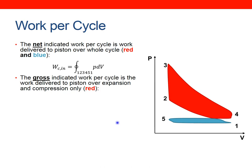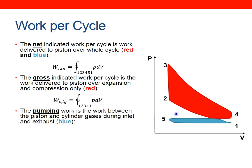The gross indicated work per cycle is the work delivered to the piston just over the compression and expansion strokes only — the red area. For an ideal cycle with no pumping losses, net would equal gross. The gross is the work done between points 1→2→3→4→1. The pumping work is the difference — gross minus net — representing the work between piston and cylinder as gases are inducted and exhausted, corresponding to the area under the curve between points 1→4→5→1.